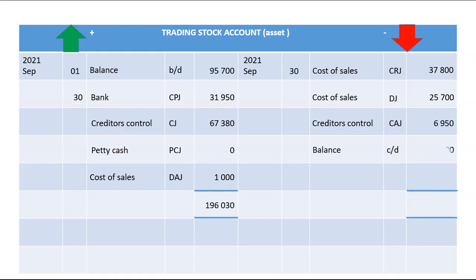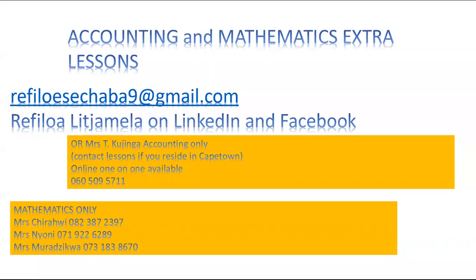Total it up and take the bigger side minus the smaller side — it gives your balance carried down. The balance carried down here will be 125,580, and that 125,580 will be our balance brought down at the beginning of the new month. Please check out the next video where we will be doing creditors control.